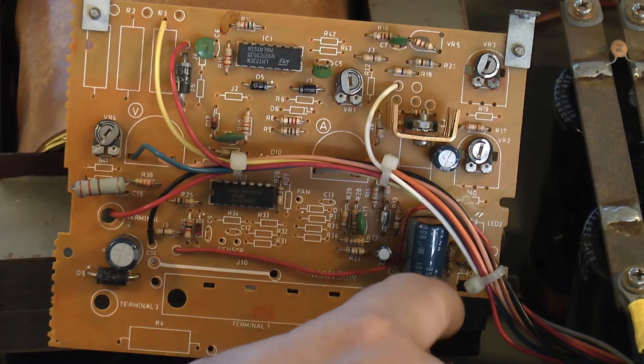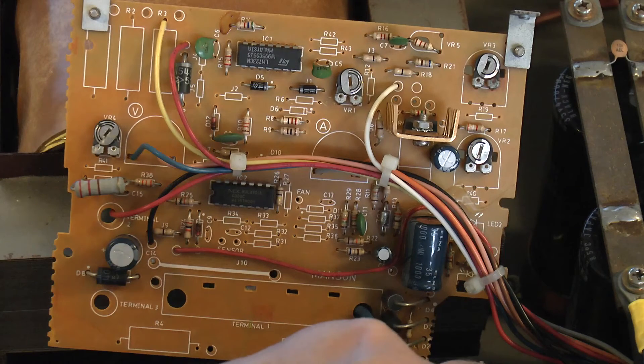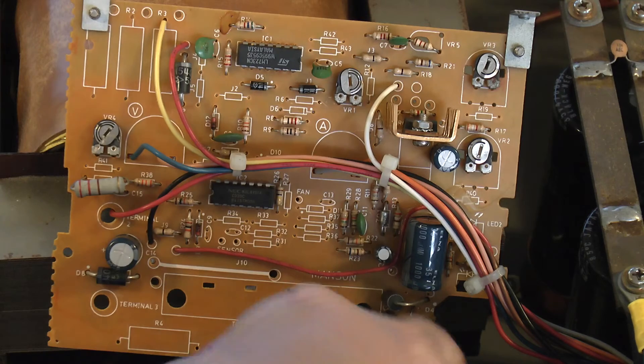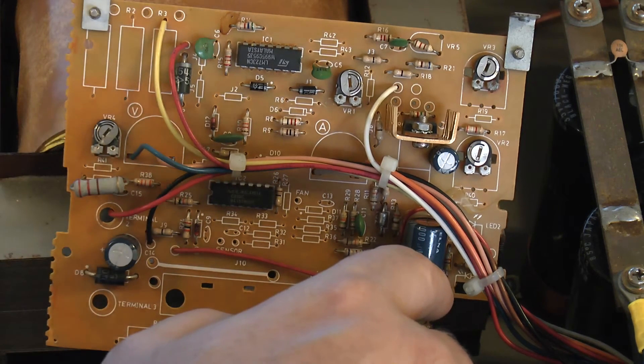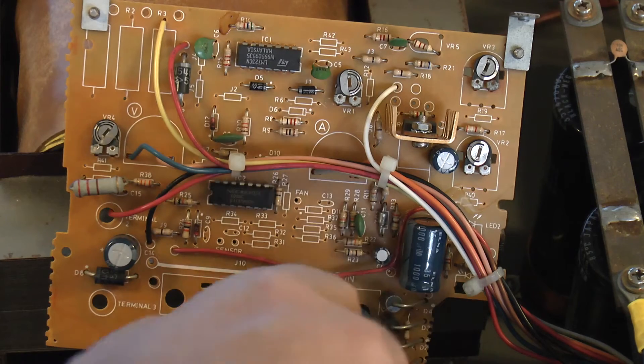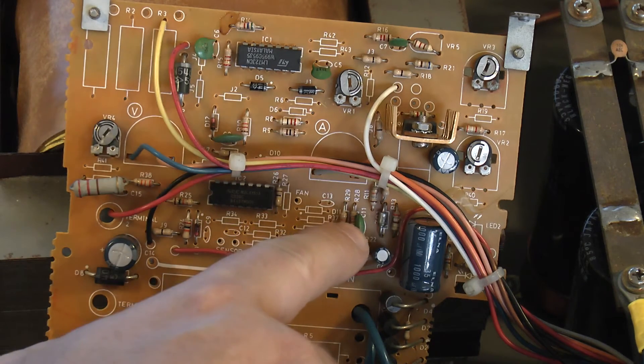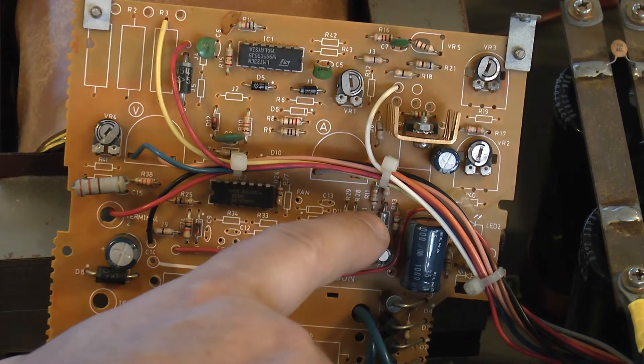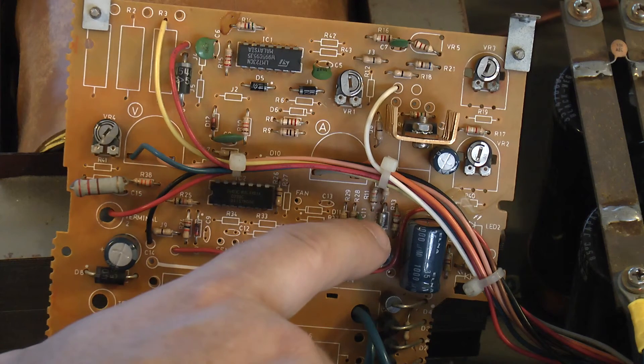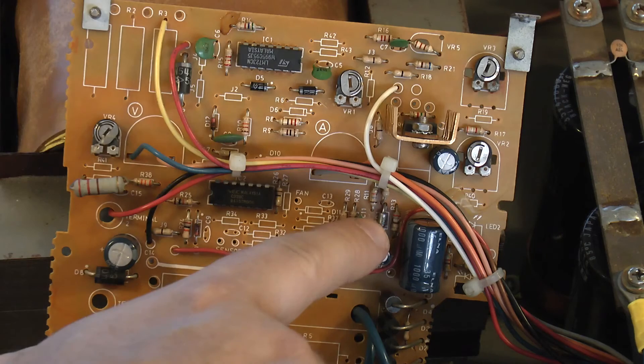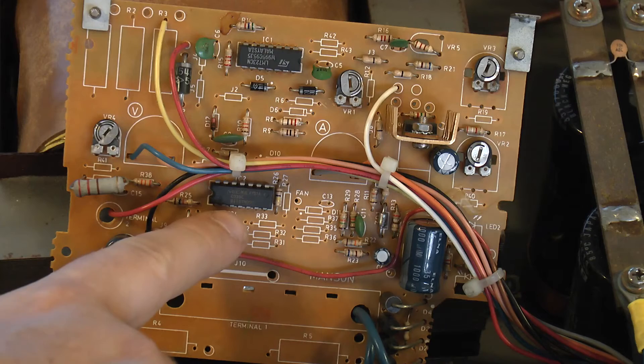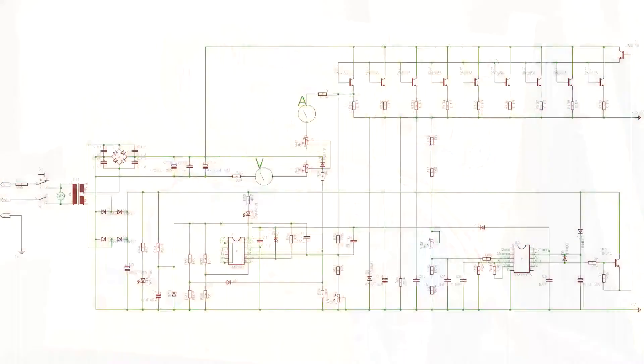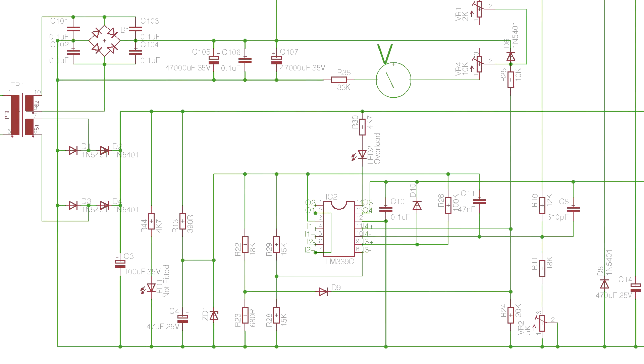So what you're left with is not a lot really. You've got the bridge rectifier here and the smoothing cap which takes, I think it's about 21 volts AC on these blue connections and smooths it and rectifies it up to about 27 volts DC near as damn it.